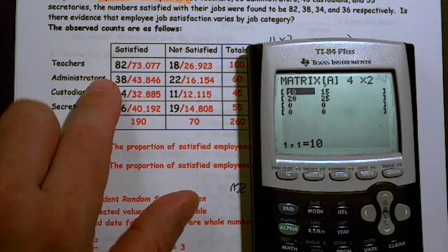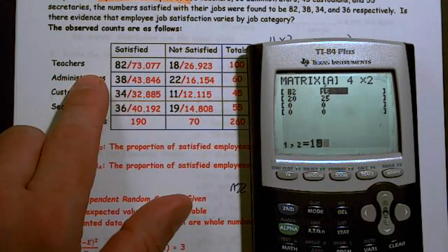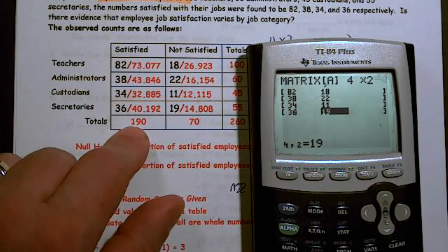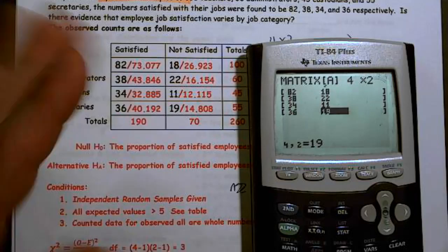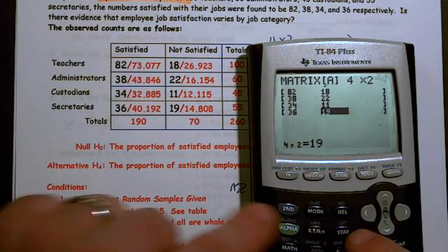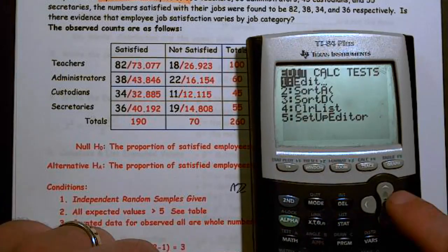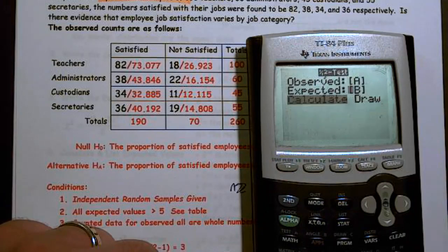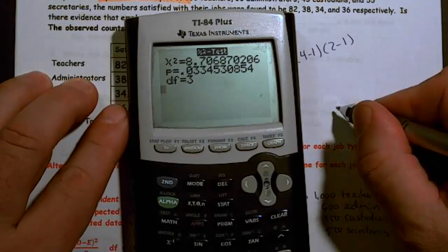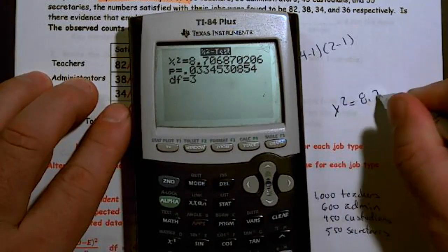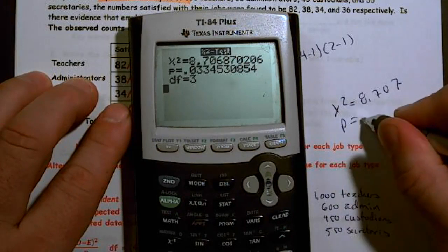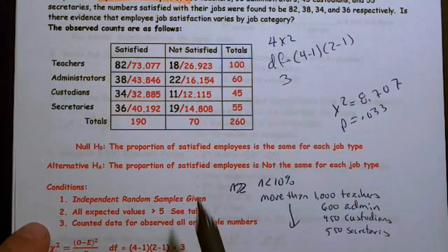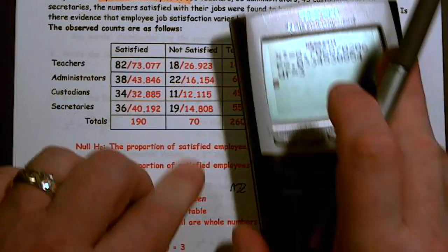So I have 82, enter, and then 18, enter. 38, enter, and 22, enter. 34, enter, 11, enter, 36, enter, and 19, enter. Then I'm going to go ahead and run the test, which I know we haven't even done our null alternative, but I'm going to go ahead and do that. So second quit, and stat test chi-squared, letter C, just like when we were running a test of independence. And when I end up getting, I'm going to write this down because we'll use this a little bit: chi squared equals 8.707 and our P equals 0.033.